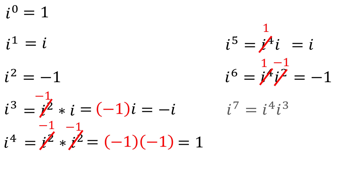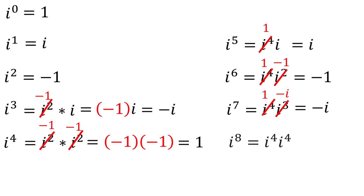i to the seventh is equal to i to the fourth times i to the third. But i to the fourth is 1, and i to the third is negative i. So we have 1 times negative i, which is equal to negative i. i to the eighth is just i to the fourth times i to the fourth, which is 1 times 1, which of course is 1.